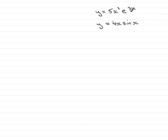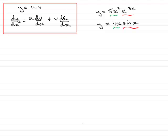If we have functions like y equals 5x squared times e to the 3x, or y equals 4x times sin x — where we've got two functions of x being multiplied together — we use the product rule. We call the two functions u and v, so y equals u times v. For example, u would be 5x squared and v would be e to the 3x; or u would be 4x and v would be sin x. It can be shown that dy by dx equals u times dv/dx plus v times du/dx.